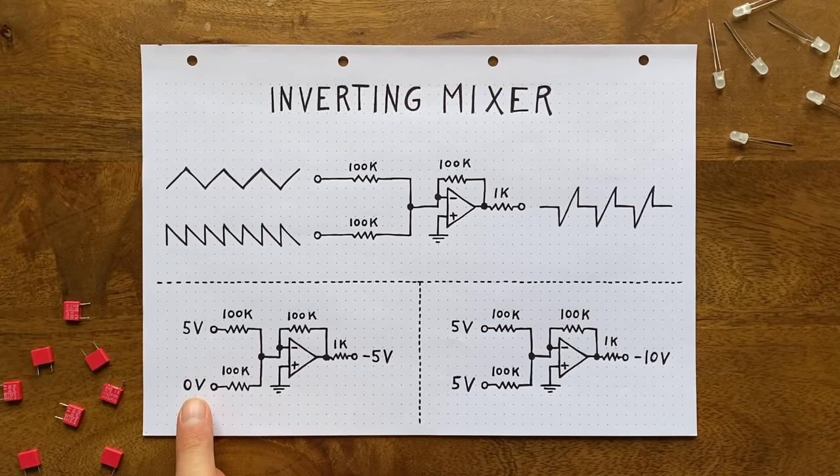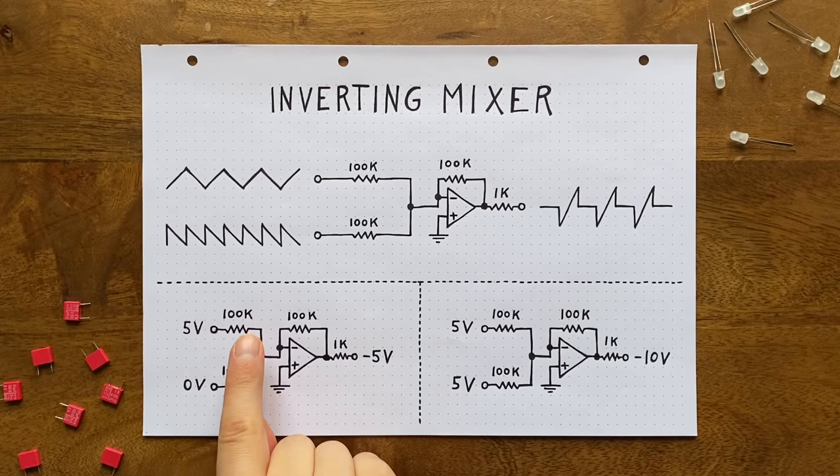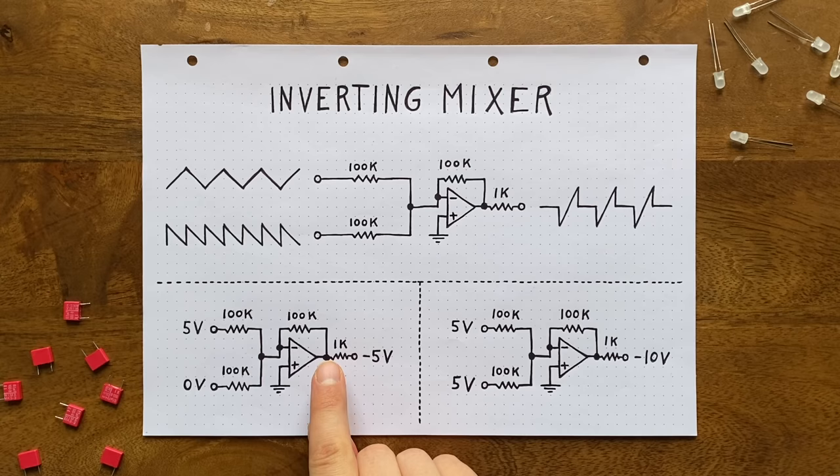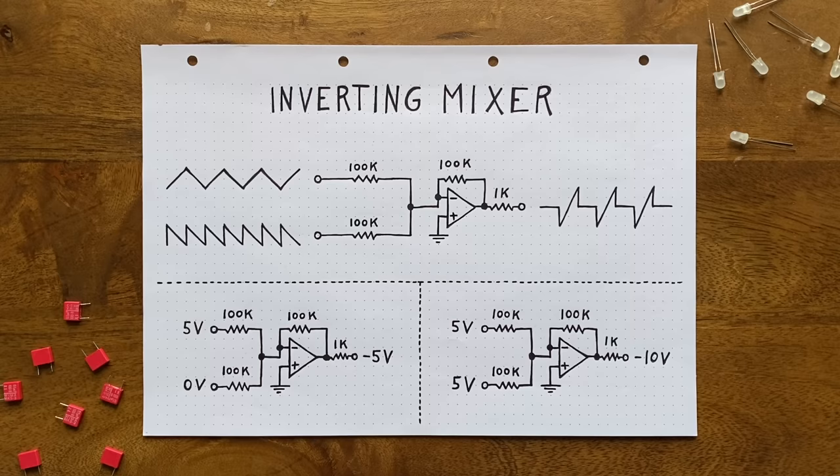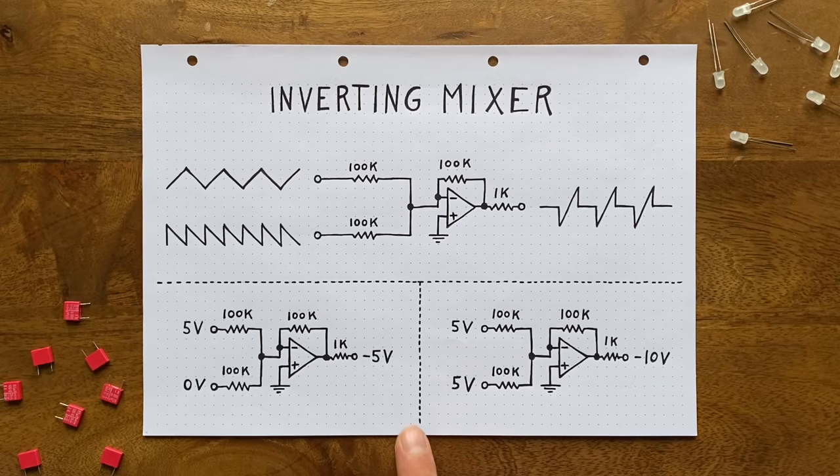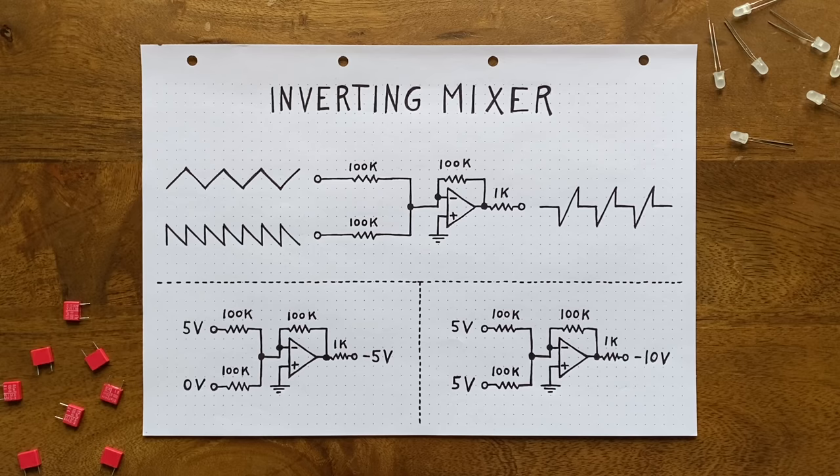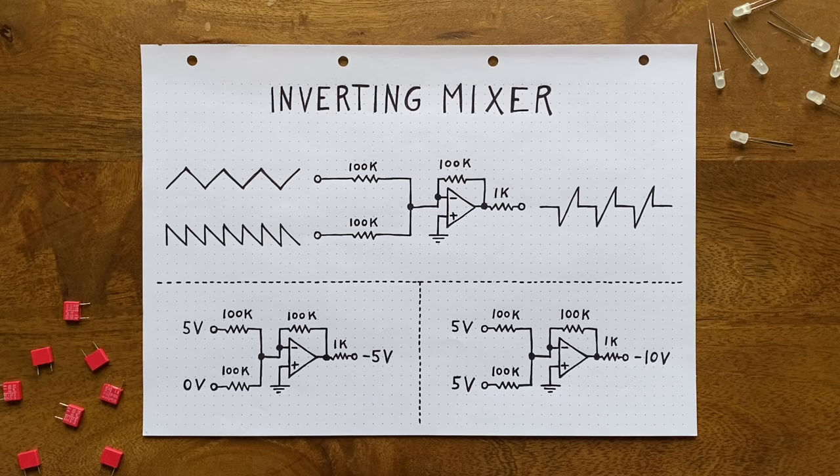In order to get the voltage at the inverting input down to 0 volts, the output has to neutralize the current flowing through our input resistors. Since one signal is sitting at 0 volts though, there's nothing coming in on that path anyways. So we only have to worry about the other one. Here the relation is really simple. Our output has to pull exactly as much current through the feedback resistor as our input is pushing through the input resistor. Since both resistors are of the same value, both the pushing and pulling forces have to be exactly equal, just inverted. This means that our output has to sit at minus 5 volts to neutralize the 5 volts at this input.